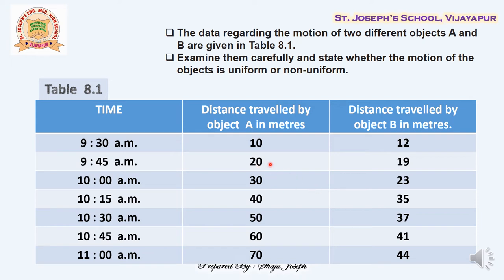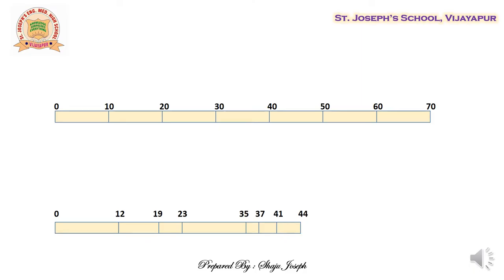If we compare, we find that the difference between two consecutive measurements is always the same in column 2, whereas in column 3 the consecutive measurements are not equally spaced. To understand this data better, we will go to a diagram.